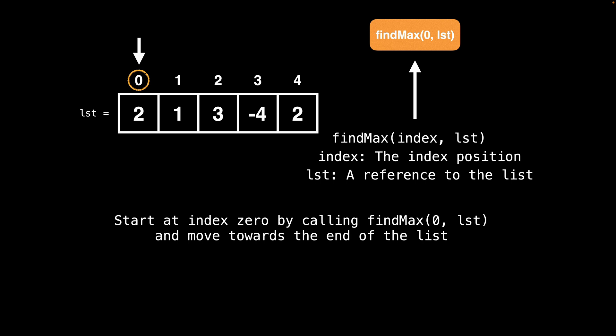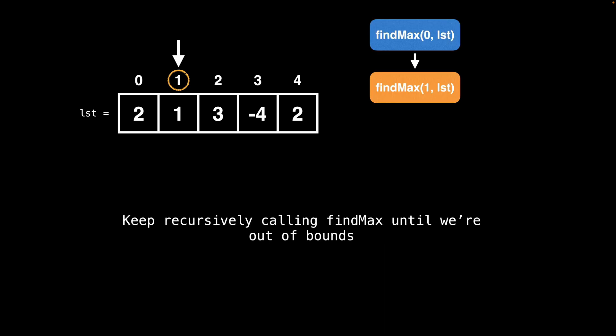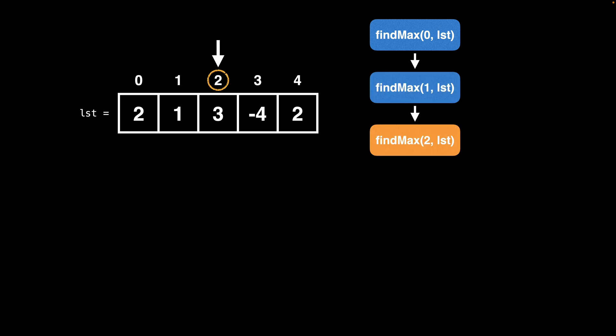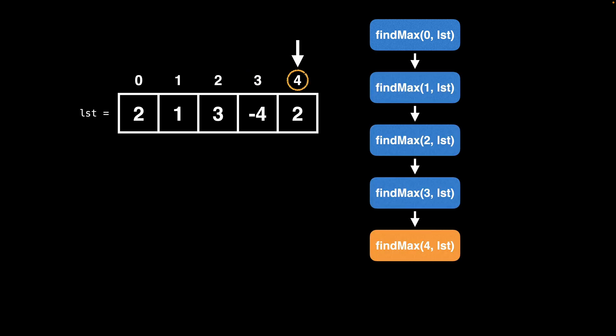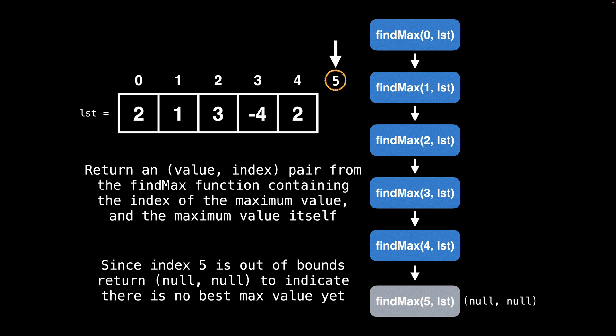We're going to start on the left side of the list and work our way to the right. We'll begin by making a call to the find max function at index position zero and move towards the end of the list. The find max function should take two arguments: the index of the current position, as well as a reference to the list. We are going to keep on recursively calling the find max function until we are out of bounds. Once we're out of bounds, we're going to return a value index pair containing the values null, null to indicate that there is no best maximum or index yet.